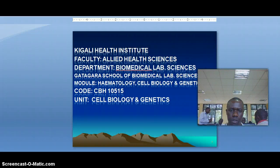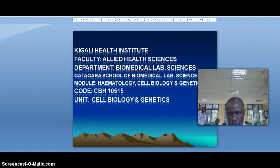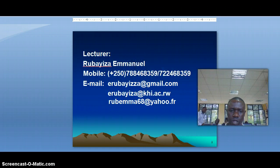Good afternoon. Today we will talk about Cell Biology and Genetics, one of the units of the module of Hematology, Cell Biology and Genetics. This module has 15 credits and Cell Biology and Genetics will cover 8 credits.